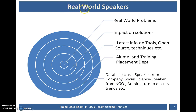To explain real-world problems, institutes should invite professionals who are already working in those areas. It gives a good impact on solutions proposed by the students because invited speakers will give information about the latest open-source or proprietary tools, techniques, and methods in use. Alumni and the Training and Placement Department of the institute help in searching for the best professionals to be invited. For example, in a database class, you should invite speakers from a database company.